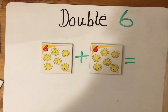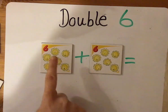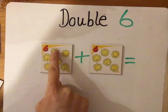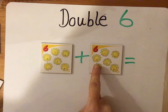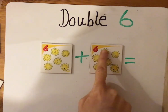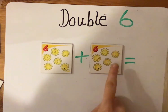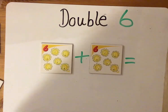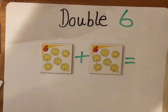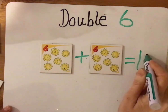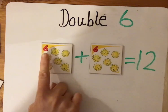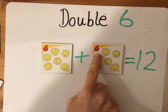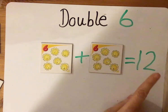Okay reception, are you ready? So double six — here we go. One, two, three, four, five, six, seven, eight, nine, ten, eleven, twelve. So double six is twelve because we had six and then we added the same number again and we got twelve.